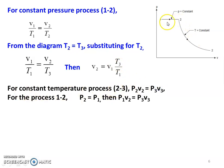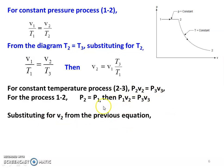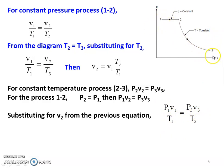For the constant temperature process 2 to 3, P2V2 equal to P3V3. For process 1 to 2, P2 equal to P1. Substituting, P1V2 equal to P3V3. Substituting the value of V2 from the previous equation, we get P1V1 divided by T1 equal to P3V3 by T3. So throughout the entire process, PV by T equals a constant.